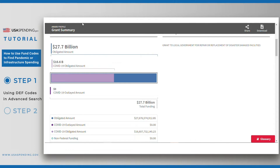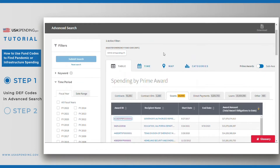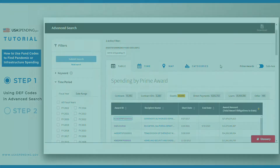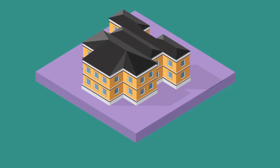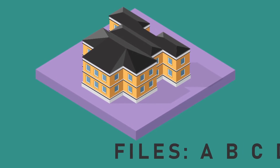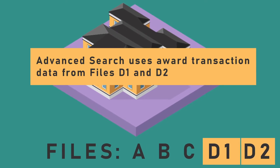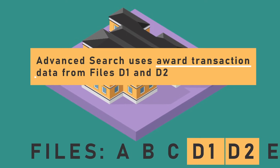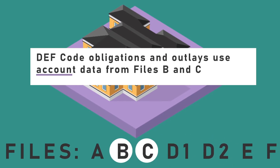Returning to Advanced Search, notice that there are three other tabs available: Time, Maps, and Categories. Normally you could consult these tabs for different views on the spending data that you have filtered. However, these three views are based on award transaction obligations, and since obligations and outlays tagged with DEF codes are not available at the award transaction level, you will not see figures for COVID-19 obligations in these tabs.